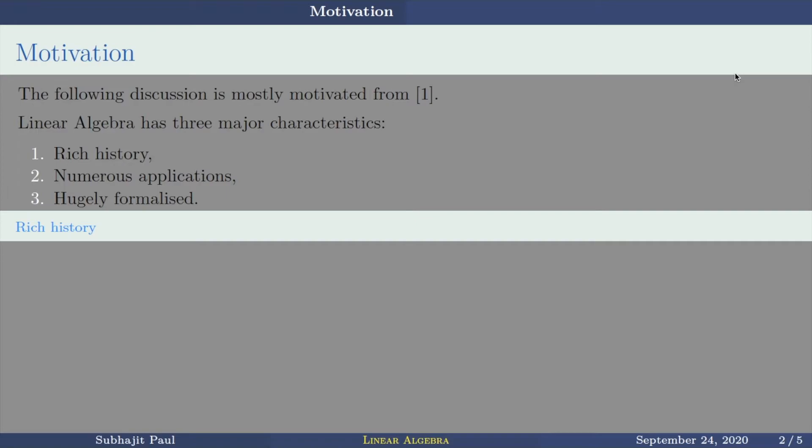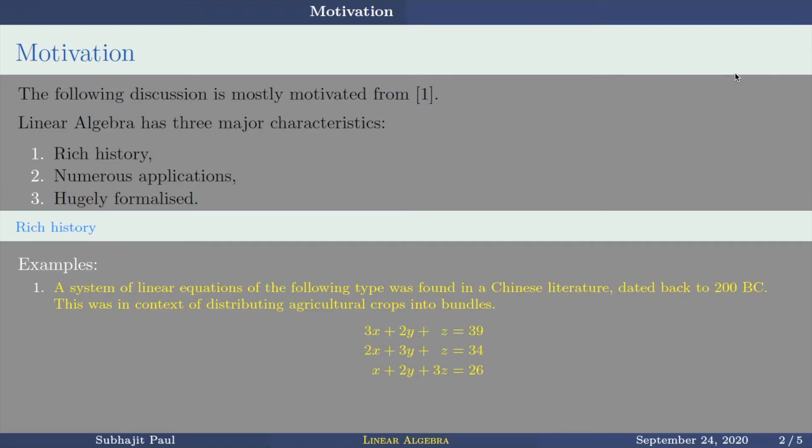First, let us talk about rich history of this subject. Now you have seen this kind of system of linear equation by now. 3x plus 2y plus z equals 39, 2x plus 3y plus z equals 34, x plus 2y plus z equals 26. Now if we want to go to the historic timeline, this was first found in a Chinese literature which dates back to 200 BC, before Christ. This equation was in context of distributing agricultural crops into bundles. So people actually solved this kind of problems in 200 before Christ.